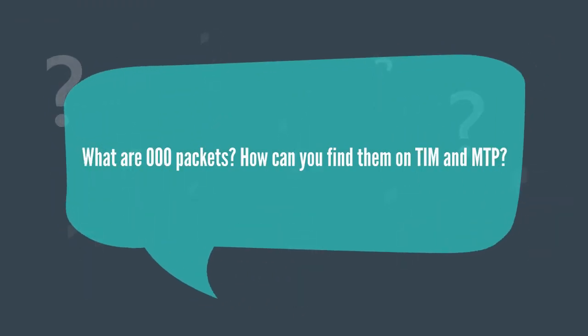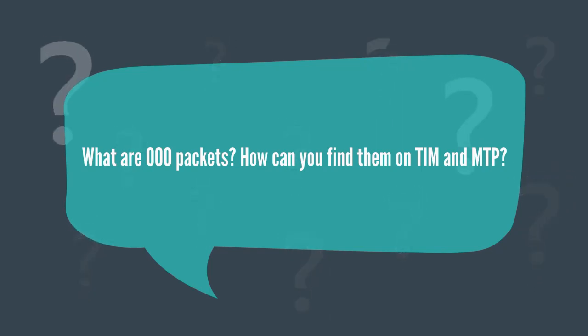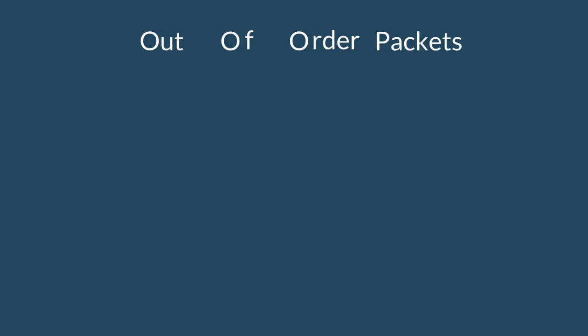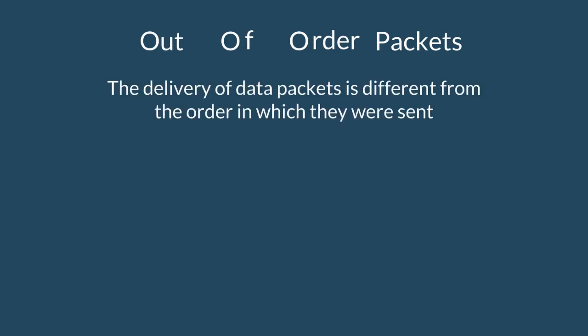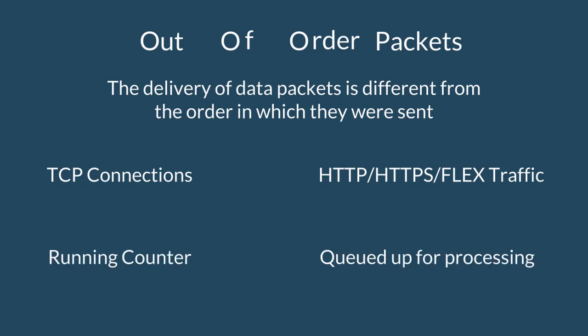Another question is: what are OOO packets, and how can you find them on the TIM and MTP? OOO packets, or out-of-order packets, is when the delivery of data packets is different from the order in which they were sent. While operational, the TIM is monitoring continuous TCP connections while looking for HTTP, HTTPS, and flex traffic. It keeps a running counter of TIM packets not arriving in order that are queued up for processing. The TIM will discard the out-of-order buffer of a partial communication flow after a predefined time to free up buffer space, leading to that dropped communication not being analyzed at all.